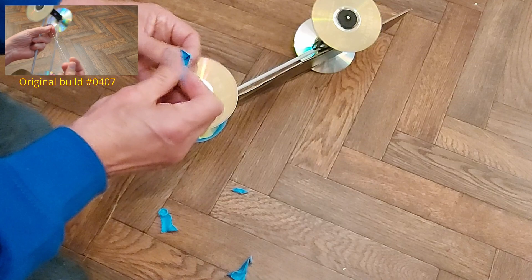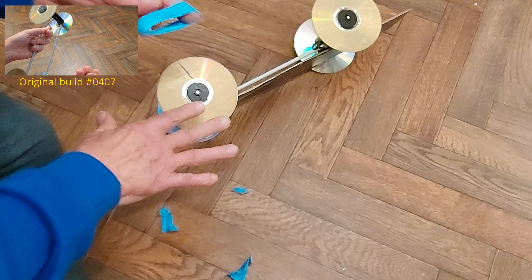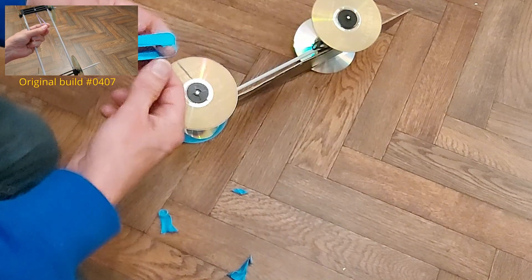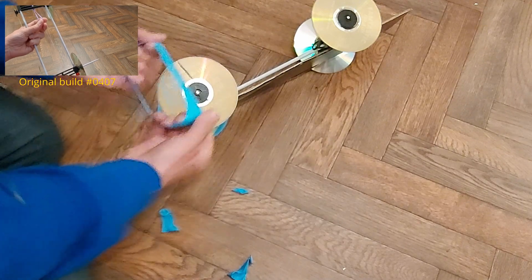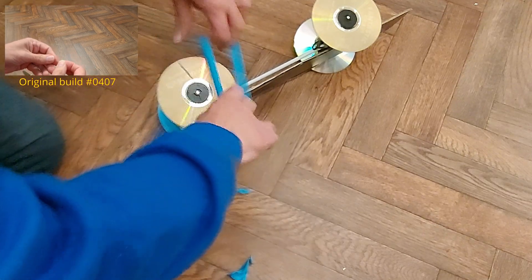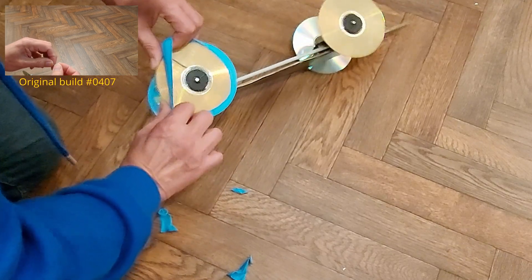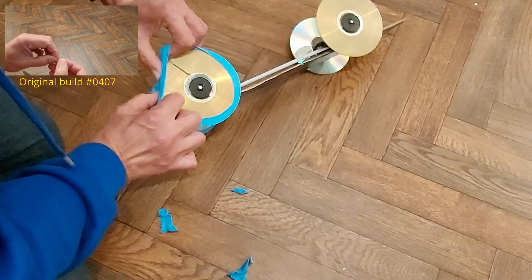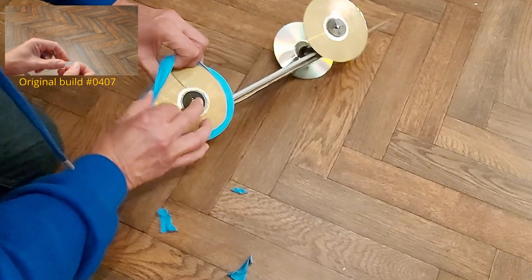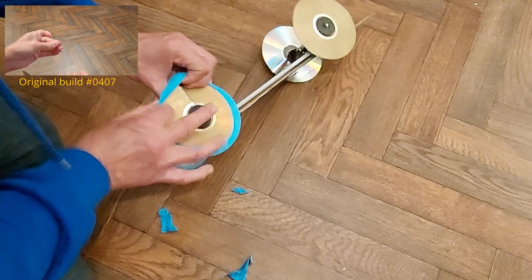And if this doesn't work, the other thing you can use is a launch mat, a rubber mat, to actually start it on. That gives it grip to get going. And then once it's going, it doesn't need that extra grip.